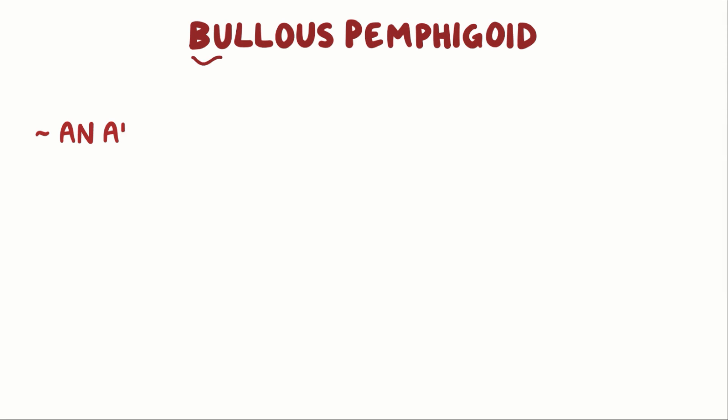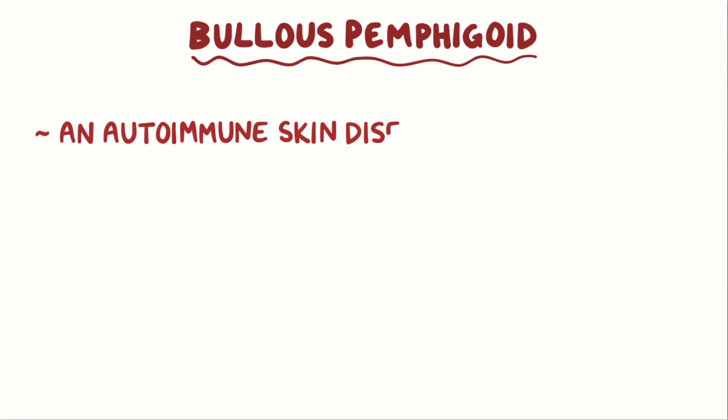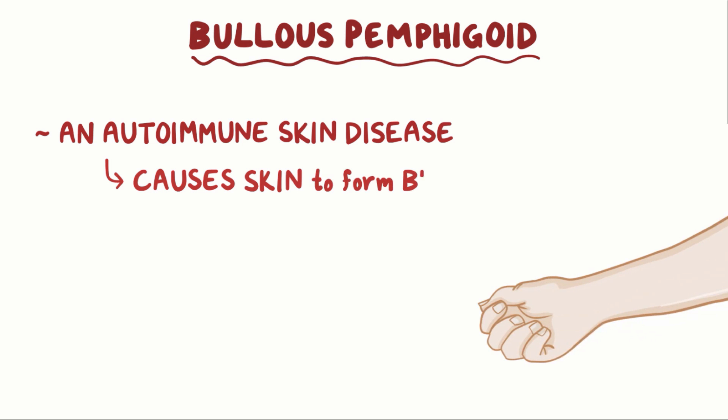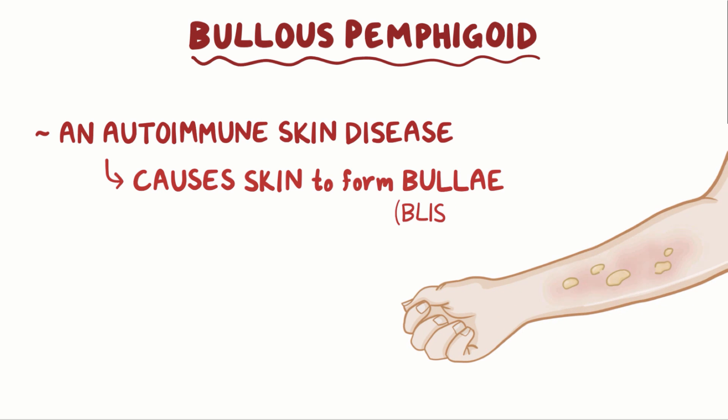Bullous Pemphigoid is an autoimmune skin disease that causes the skin to form bullae, or blisters.